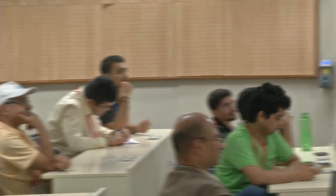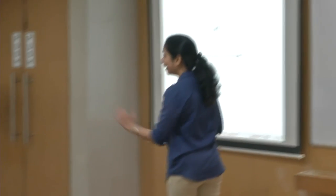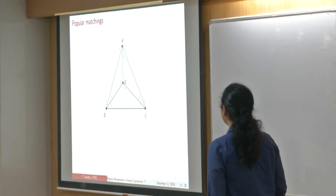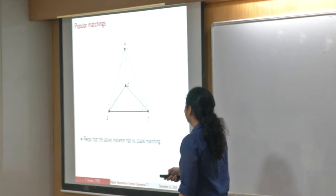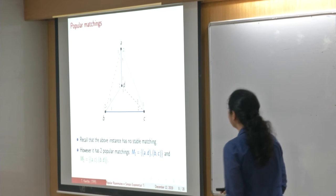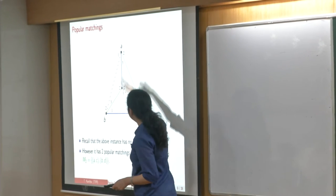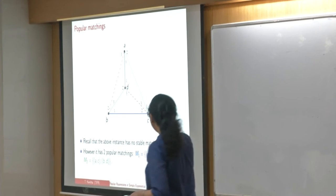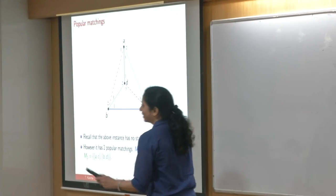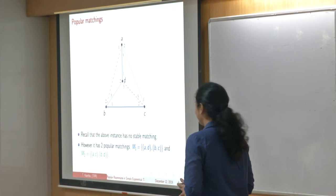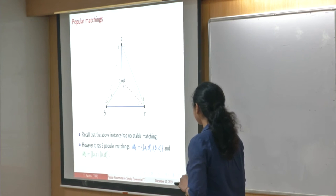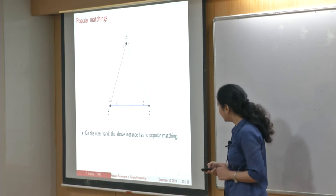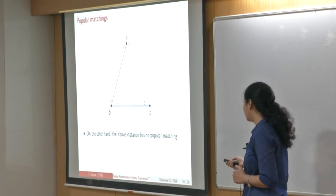Going back to the starting example which had no stable matching, it actually has two popular matchings. The blue matching that we saw in the earlier election is popular, and there is one more. In the election between the blue and green matchings, it would be a tie. Because neither can lose against the other, this instance has two popular matchings. However, there are simple instances that have no popular matchings either — for example, a triangle where A prefers B to C, C prefers A to B, and B prefers C to A.